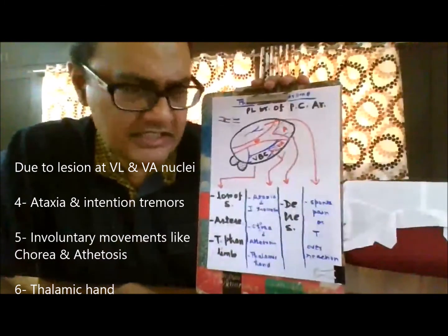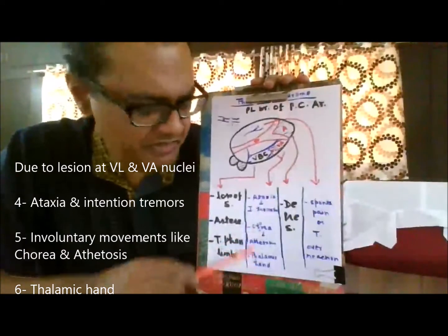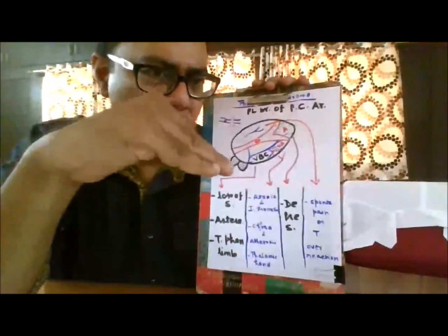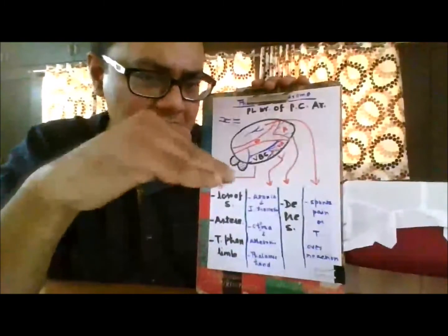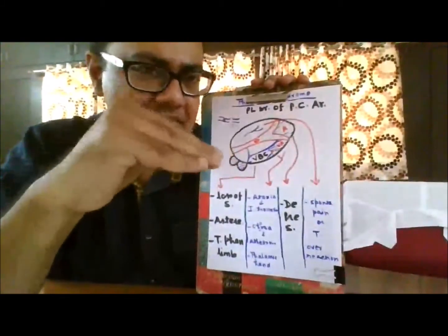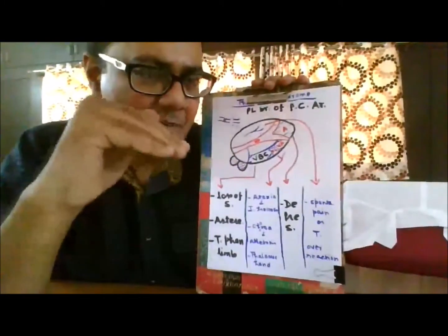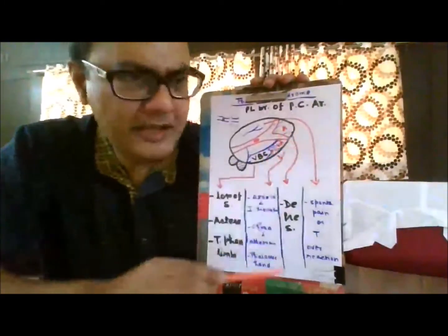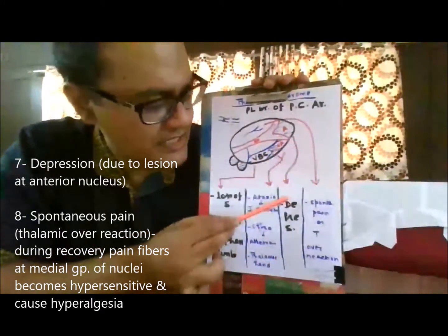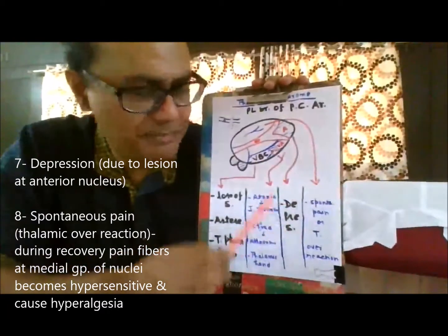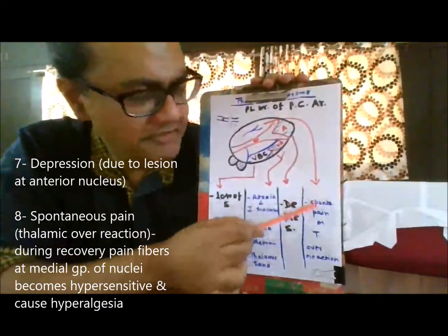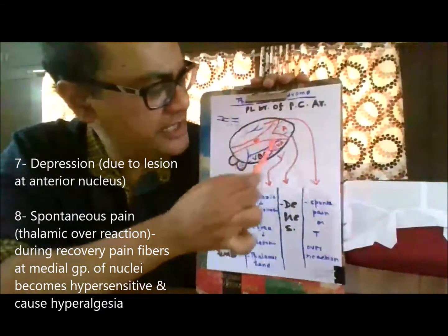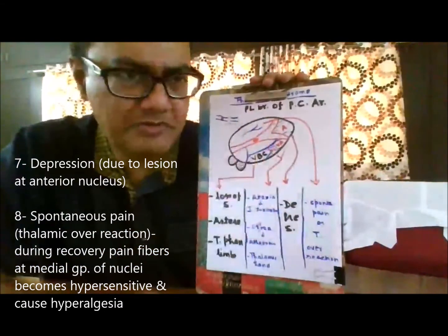There may be a particular position of the hand called thalamic hand — that is, flexion at the wrist and hyperextension at the metacarpophalangeal joint. The limbic nuclei are also affected to an extent, causing problems related to emotion and behavior, especially depression.